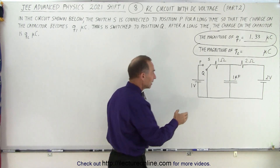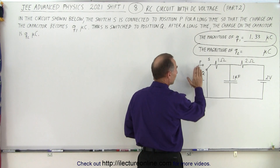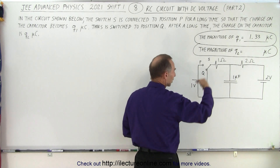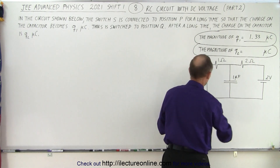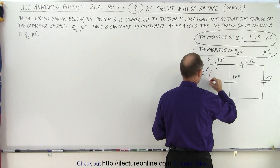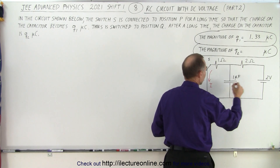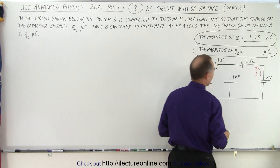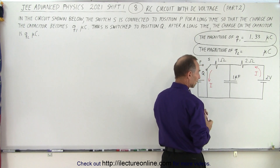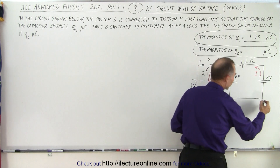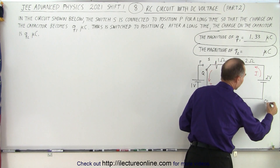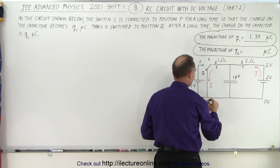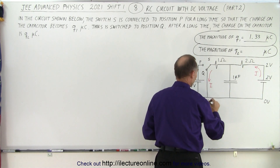Notice that the one volt supply has now been eliminated; there's no continuous circuit there. We can see that the current will flow through the circuit in this direction. We have zero volts at this point, plus two volts here, and then back to zero volts over here.